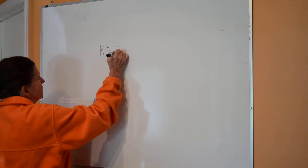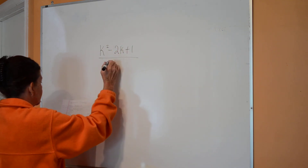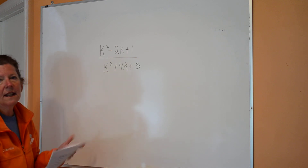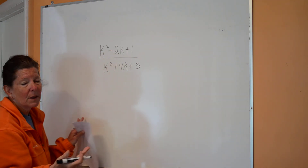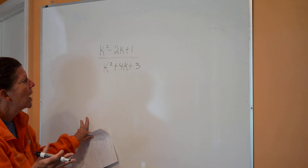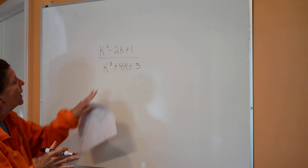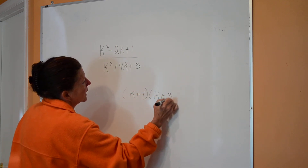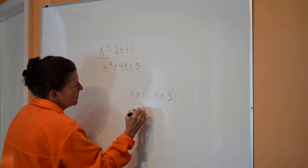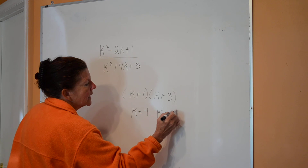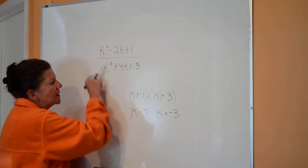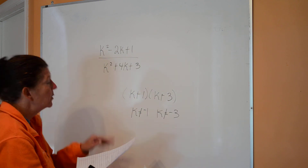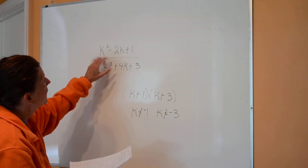Now with polynomials, not just binomials or monomials — if they say just find the excluded values, I look at what the bottom factors into. So it becomes (k+1)(k+3), then I solve each: k equals negative 1 and k equals negative 3. Those are the two values that make it undefined, so k cannot equal negative 1 and k cannot equal negative 3.